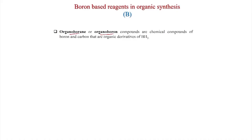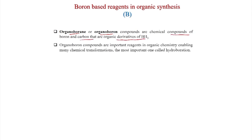Welcome again. Today we will discuss boron-based reagents in organic synthesis. Organoborane or organoboron compounds are chemical compounds of boron and carbon that are organic derivatives of BH3. Organoboron compounds are important reagents in organic chemistry enabling many chemical transformations.